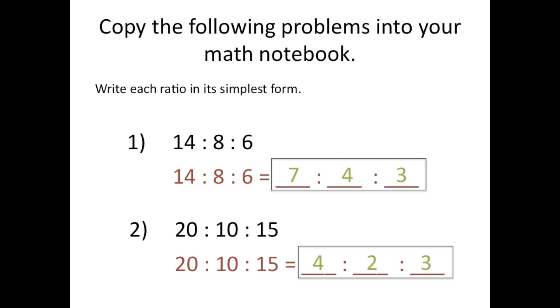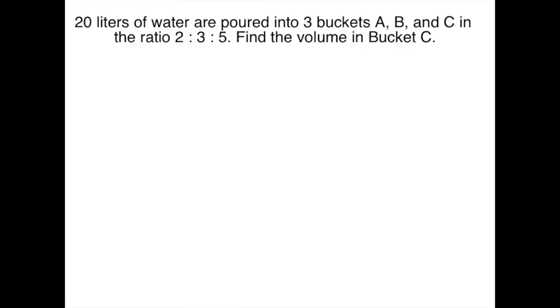You can see it's very similar to what we've already been working with. Okay let's take a look at a bar model problem together. And you'll see how similar this is to the other ratio problems we were already solving with two quantities. This problem says 20 liters of water are poured into three buckets A, B, and C in the ratio 2 to 3 to 5.